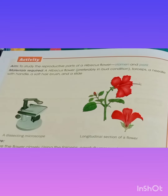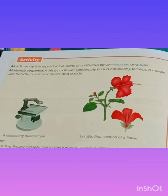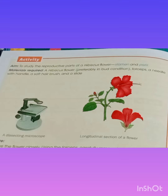The ninth question is: define pollination. Pollination is the process of transfer of pollen grains from the anther to the stigma of a flower. There are two types of pollination: the first is autogamy, also known as self-pollination, and the second is allogamy, or cross-pollination.